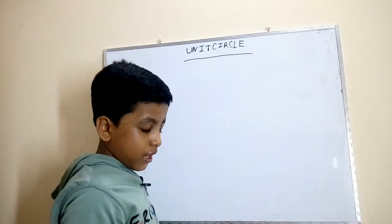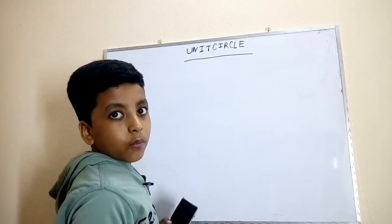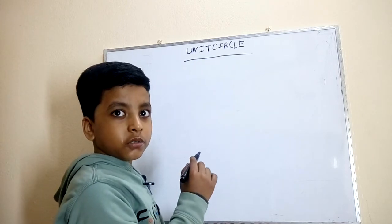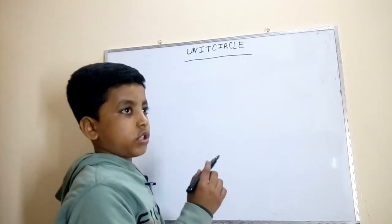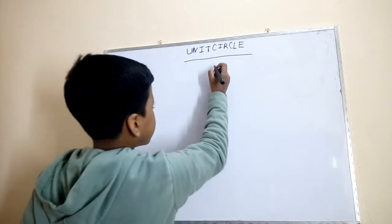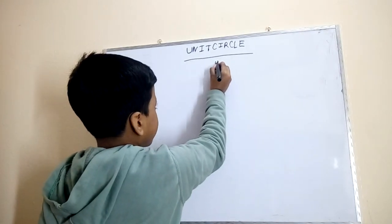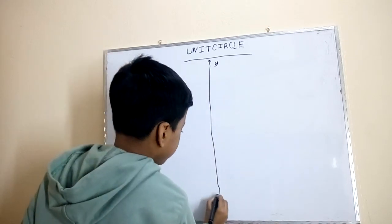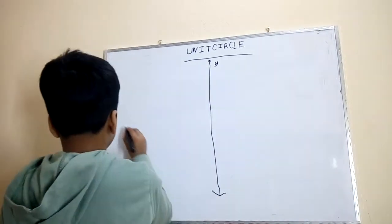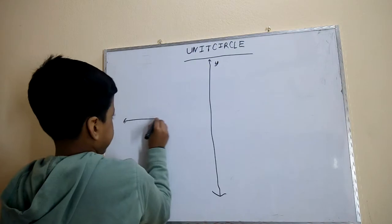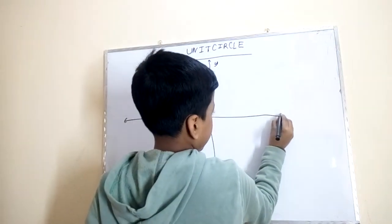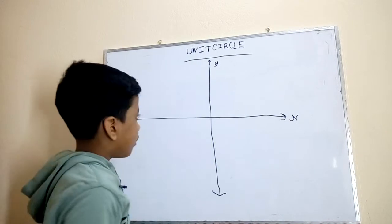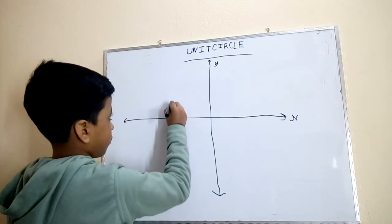So first we need to draw the unit circle because we're going to talk about the unit circle. First we need to draw the y-axis, then we need to draw the x-axis. Now let's draw a circle.